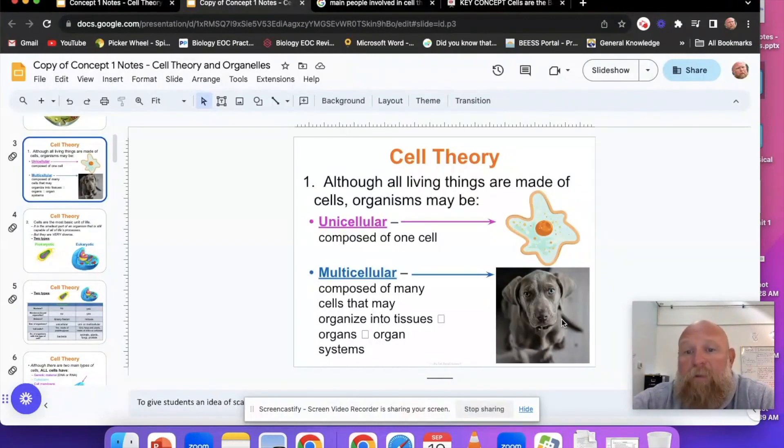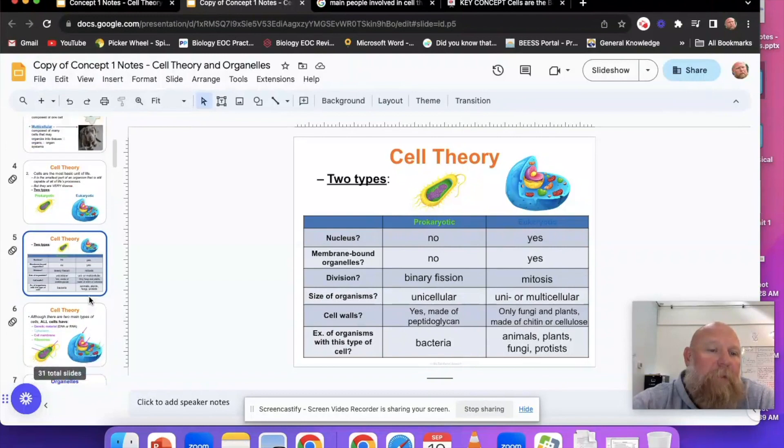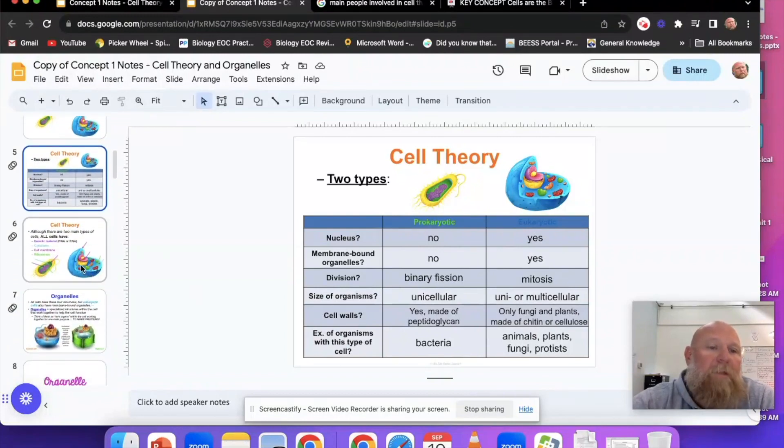Cells could be multicellular or simply unicellular like a single blood cell or a single skin cell. The cell walls, no, only fungi and plants have cell walls made of chitin or cellulose. Examples are plants, fungi, protists, and animals, all labeled as eukaryotic cells.